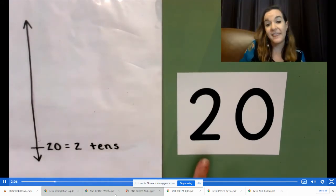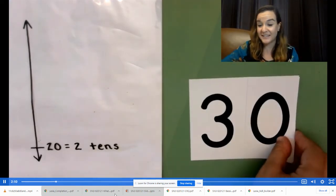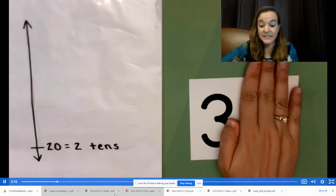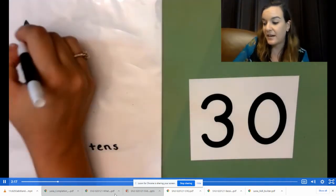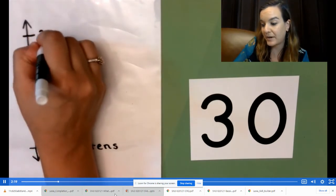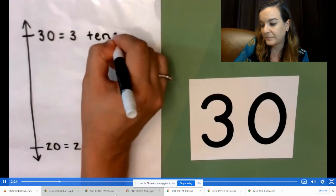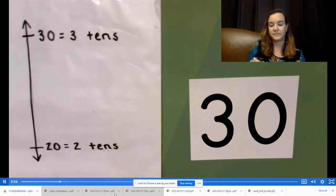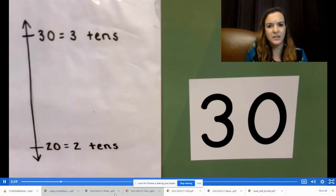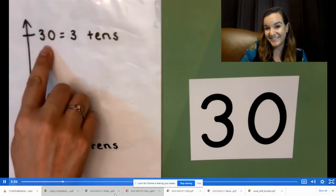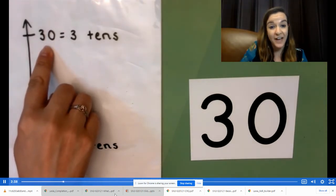What is one more ten than two tens? Three tens. Let's label that on our top tick mark. Now let's think. What number is halfway between 20 and 30? 25.